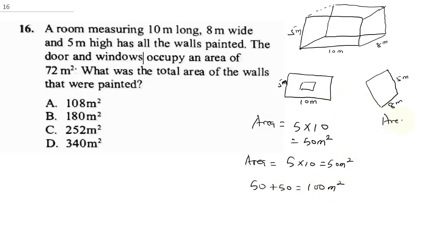For this one, the area will be 5 times 8, which will give us 40 meters squared. Same thing applies to the opposite one, which will be 5 times 8, and that will give us 40 meters squared. Then, you are going to sum up 40 plus 40 to get 80 meters squared.